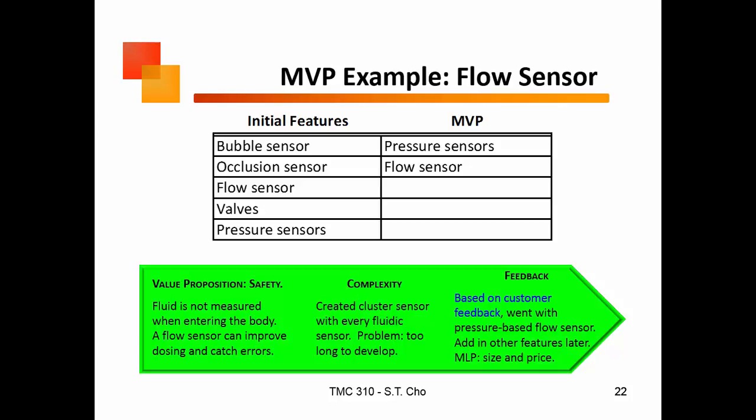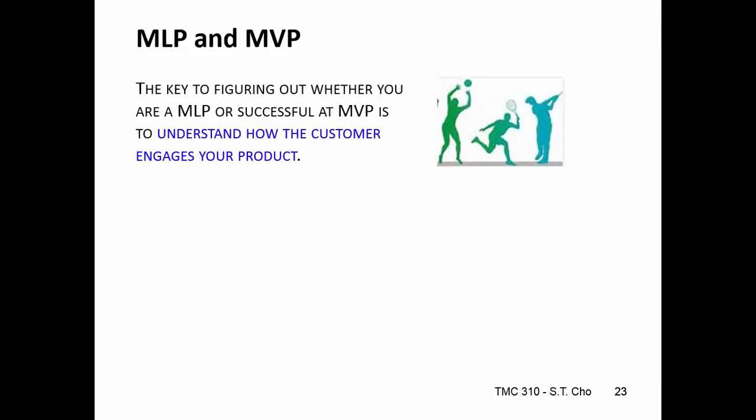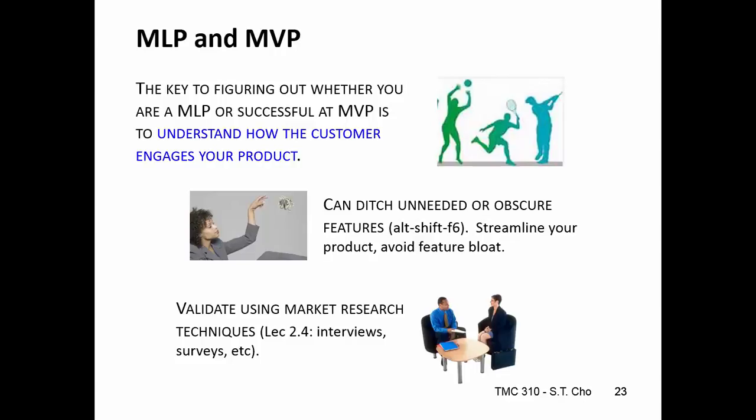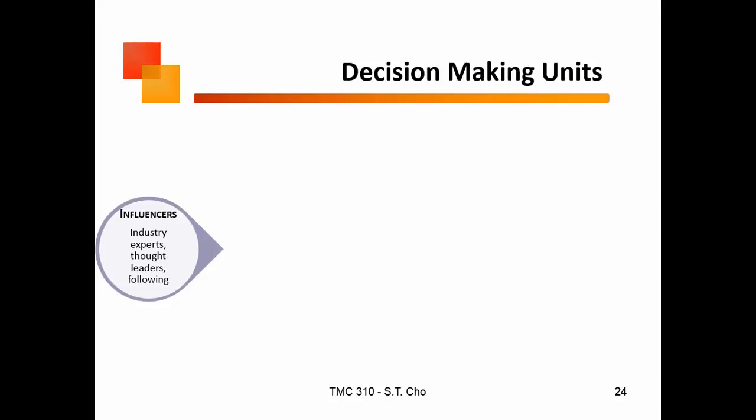An example of MVP was the flow sensor. Originally that sensor had all these other features — bubble sensors, occlusion sensors, valves, and everything else. What people really valued were the pressure sensors and the flow sensors. They want to know the pressure in the line and how much flows out. The value proposition initially was about safety, but all those extra features people really didn't want. In terms of MLP and MVP, the key thing is to understand how your customer engages the product — by understanding that, you can figure out what to ditch. You can validate it using market research techniques we'll talk about in Electric 2.4.